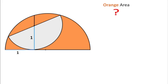Welcome to Definite Mind. In this question there are 2 semicircles as we can see, and the radius for the smaller semicircle is 1 unit, this line segment length is also 1 unit, and we have to find the orange shaded area in this question.